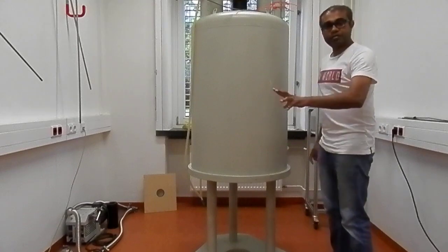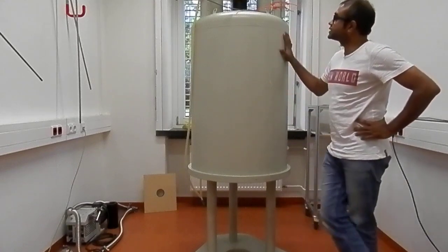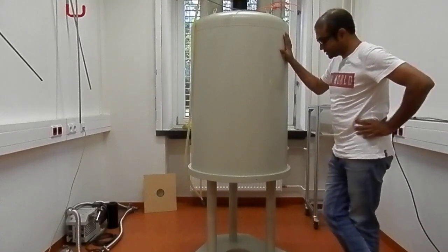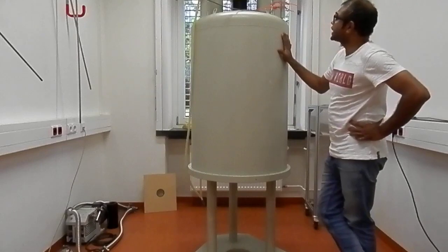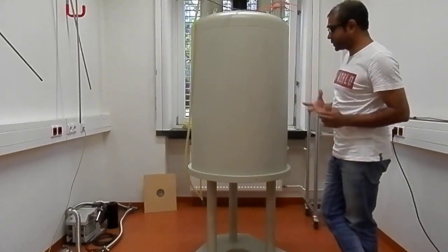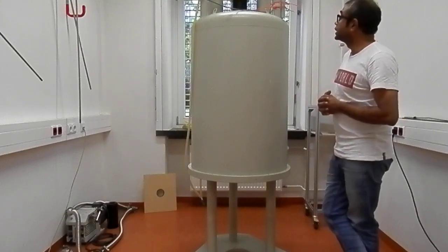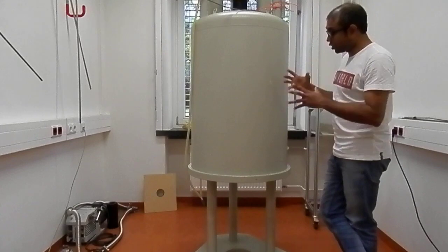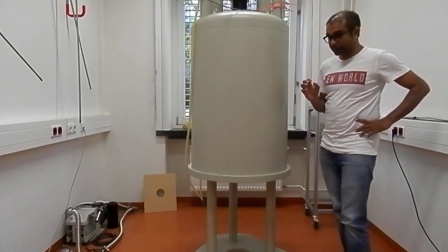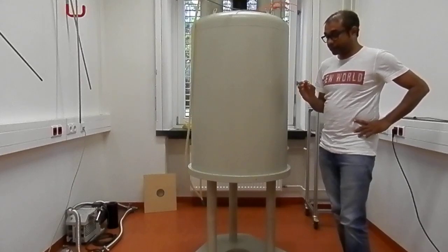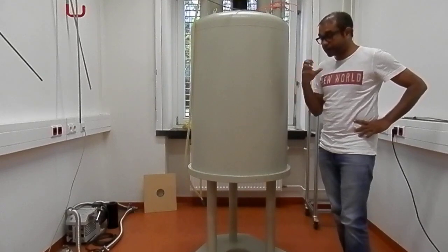Today I will show you a few experiments with this 7 Tesla high homogeneity magnet. This is actually an NMR magnet, and the homogeneity is better than one part per million. It has a really strong field, and I would like to show you some experiments demonstrating how strong and effective this magnet really is.